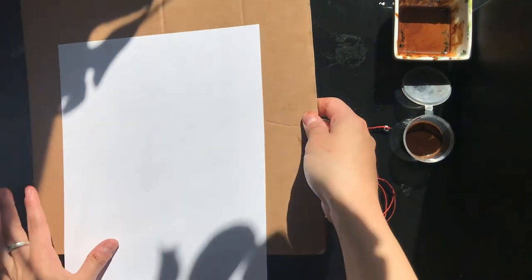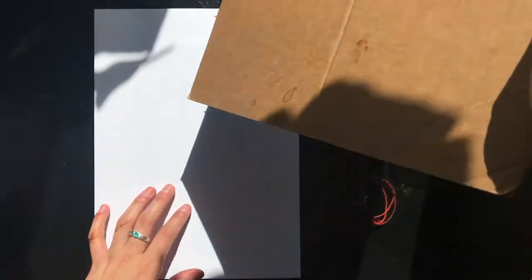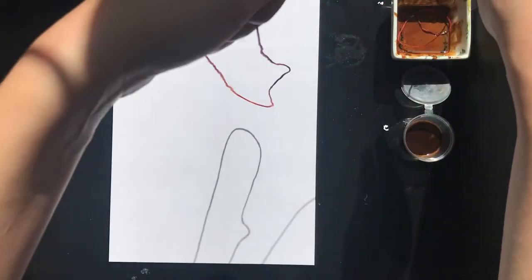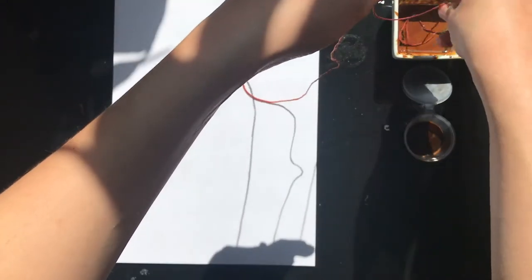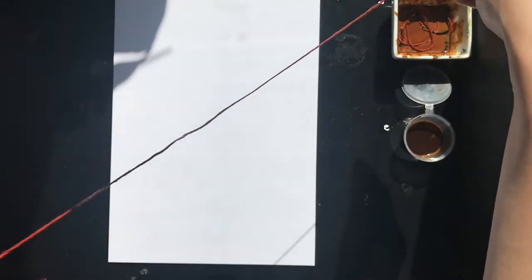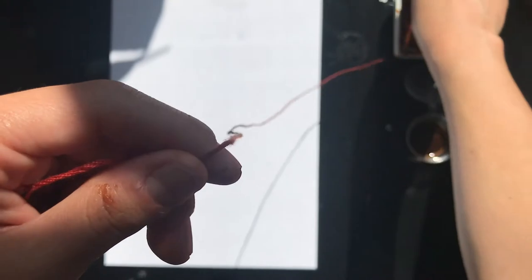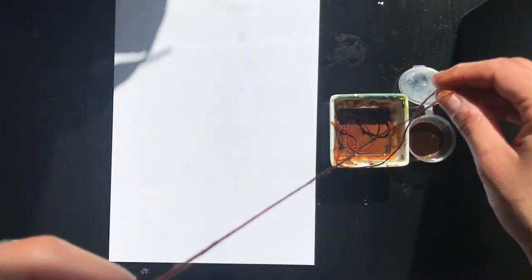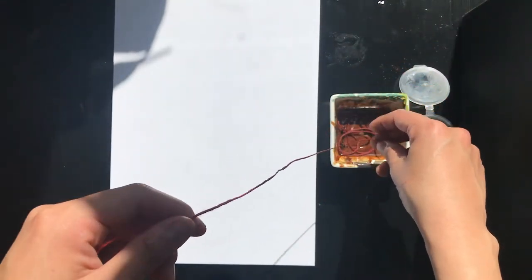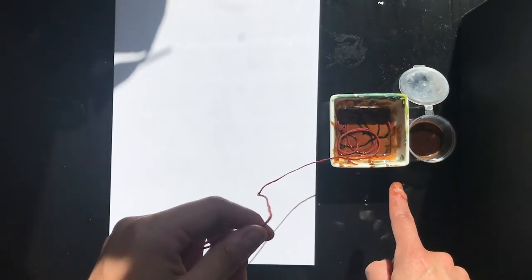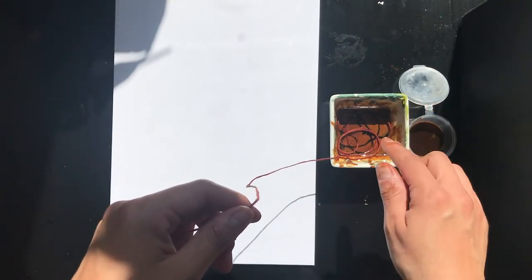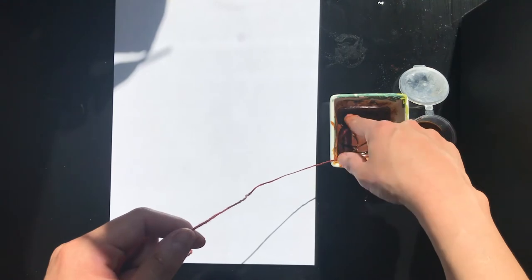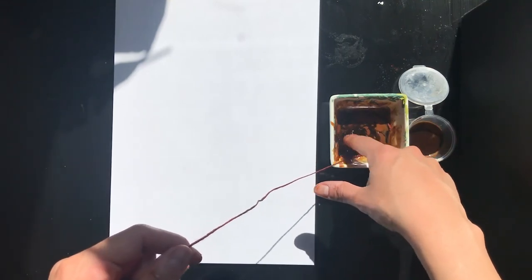Right, so what you're going to do, I'm just going to put the piece of cardboard aside for a moment, and you want to dip your string in the ink, and this ink is quite thick so I'm just going to give it a little help so it soaks the ink.